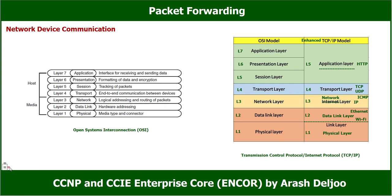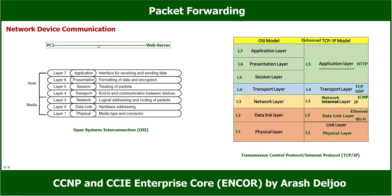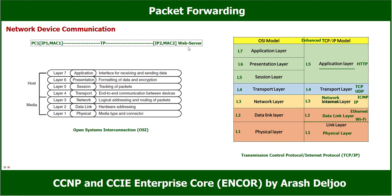Let me explain one usage of the OSI model or the enhanced TCP/IP model — both are the same. Assume we have PC1 and we want to send traffic to another PC or a web server. There is a media between the PC and the web server. PC1 has an IP address (IP1) and a MAC address because this is an Ethernet network. The media can be copper cable, fiber, or radio wave — here we are using twisted pair cable. The web server also has IP address (IP2) and a MAC address.